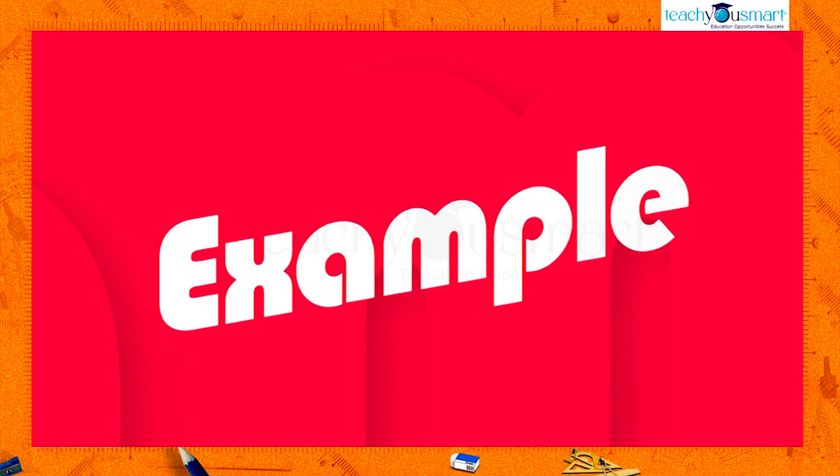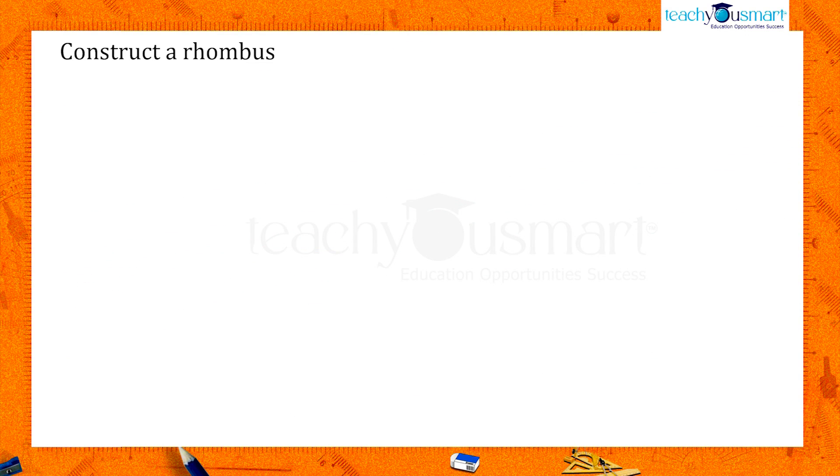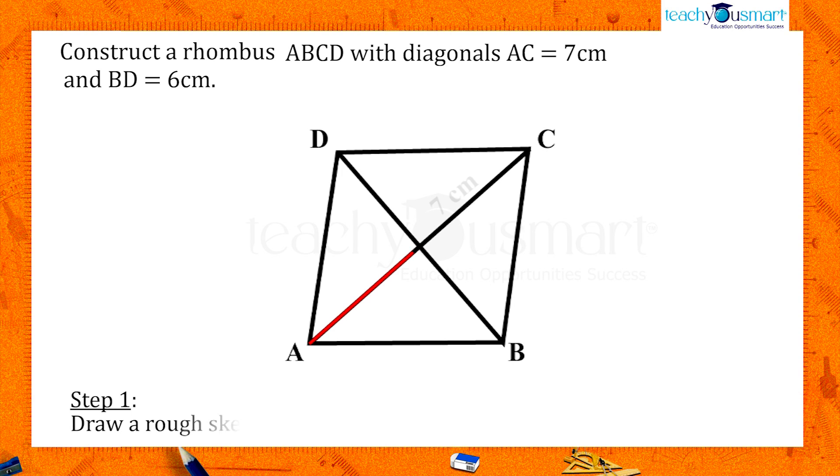Now let's start the construction of rhombus through an example. Construct a rhombus ABCD with diagonals AC = 7 centimeters and BD = 6 centimeters. So firstly, draw a rough sketch.